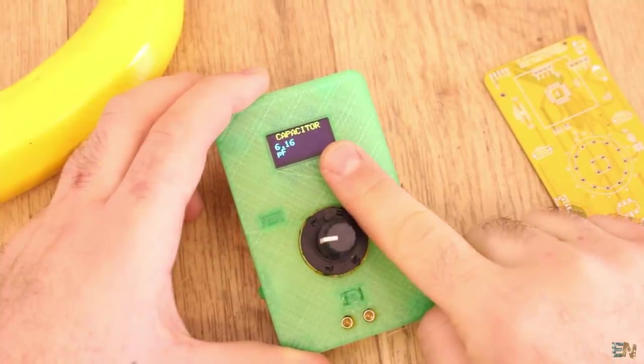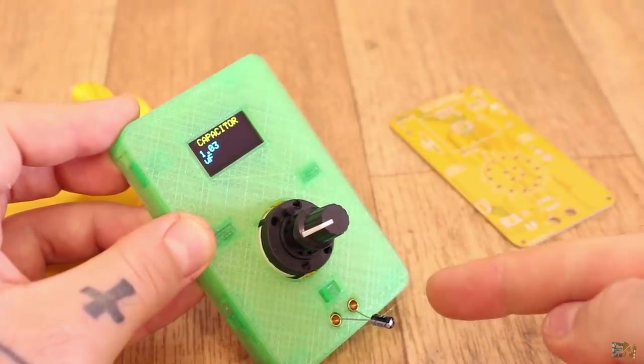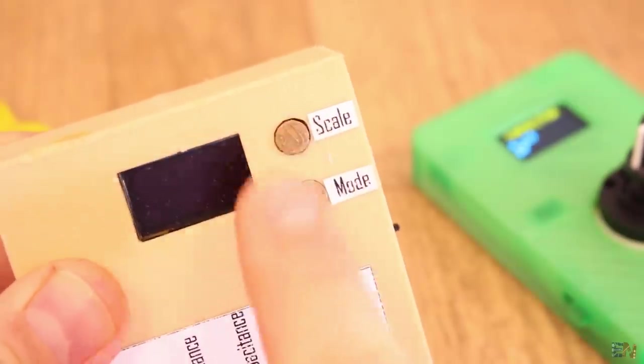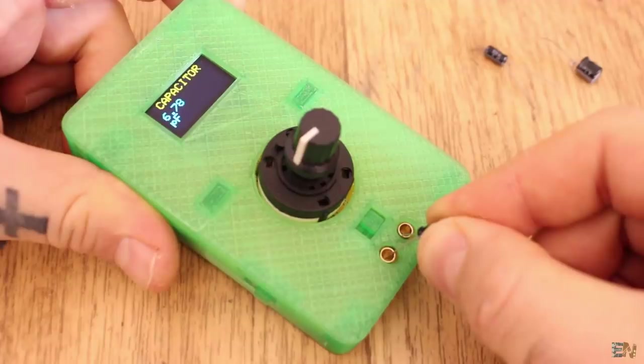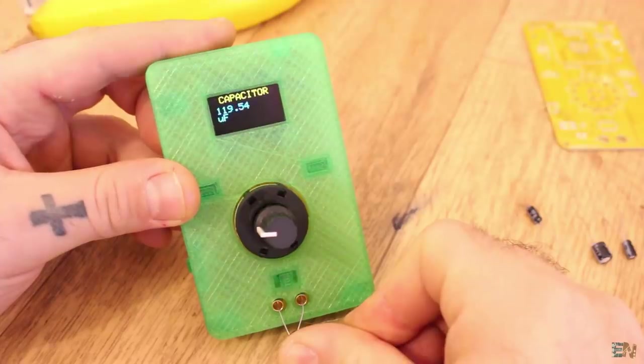Now we can measure capacitance. In this case, we have 2 scales as well that will automatically change. In the past tutorial, the scale change was made manually, so this is also an improvement. The first scale is from 0 up to 1uF and the second one is from 1uF up to very high values.